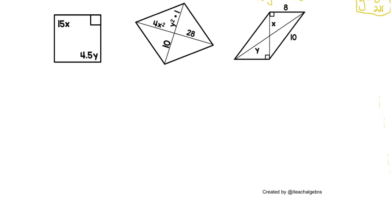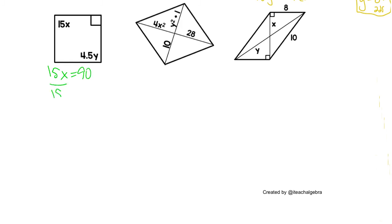Moving on. Last couple here. We know here that if one angle is 90, all the angles are 90. So 15X equals 90. We divide by 15, and X is 6. And 4.5Y is 90. Divide by 4.5, and Y is 20.